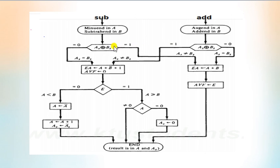Basically the flowchart can be divided into two sections: subtraction and addition. We have two variables A and B representing two binary numbers, and AS represents the sign bit of A and BS represents the sign bit of B.